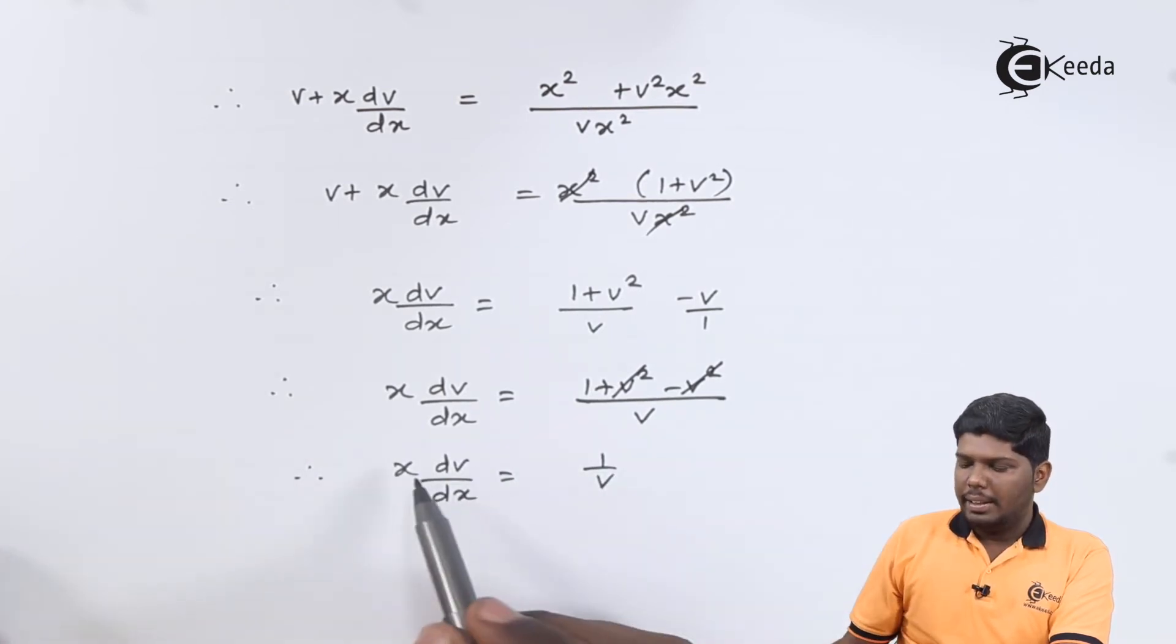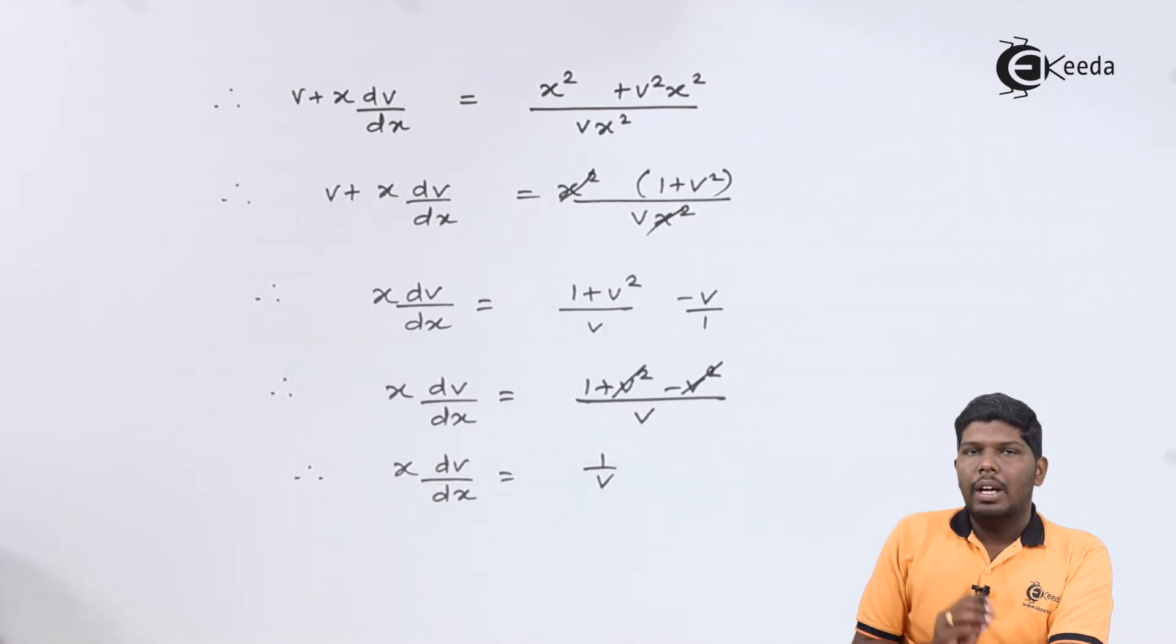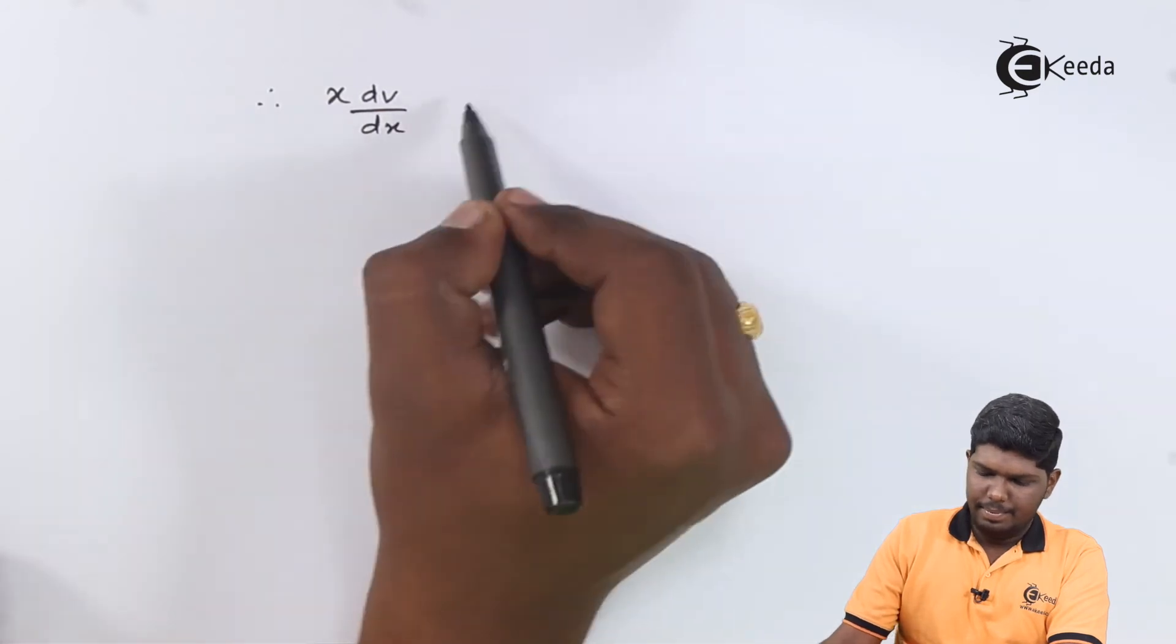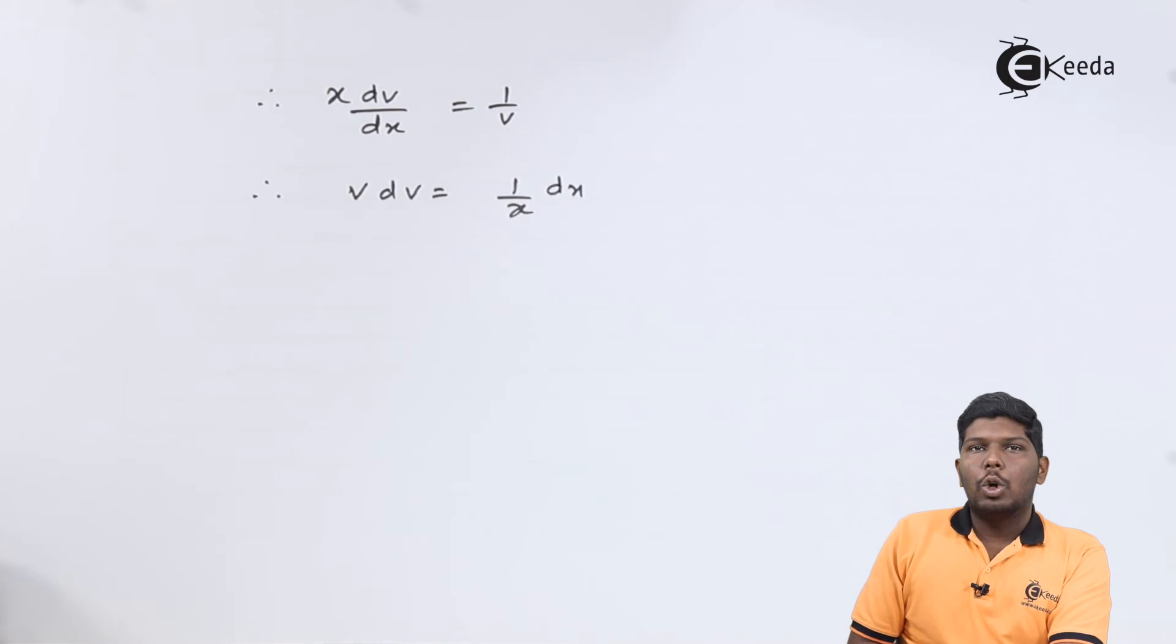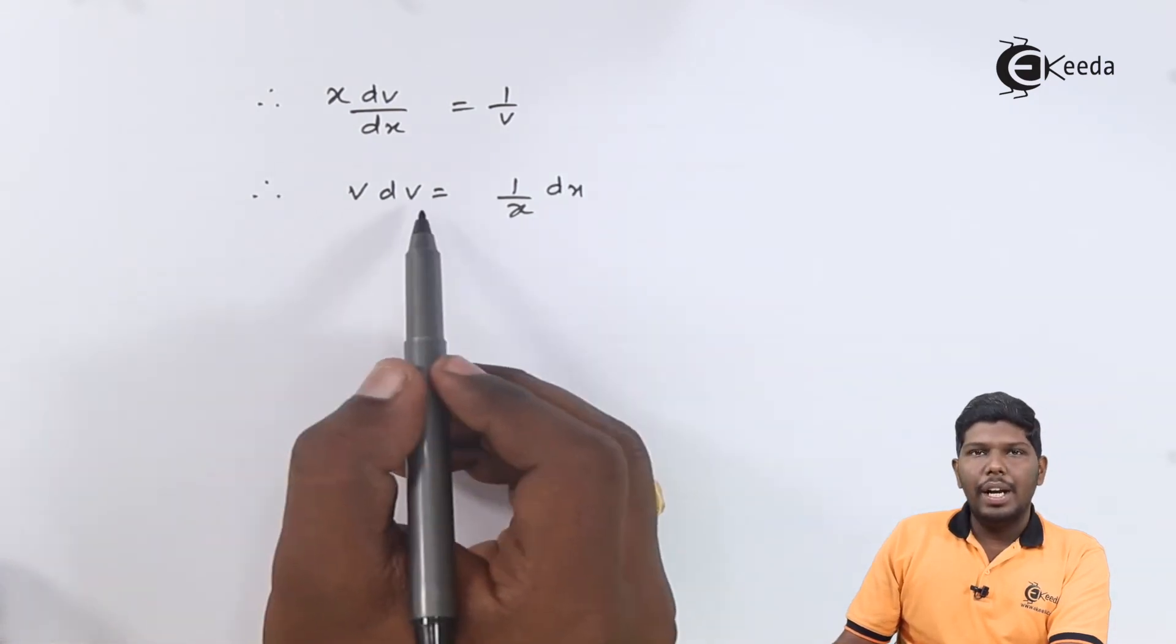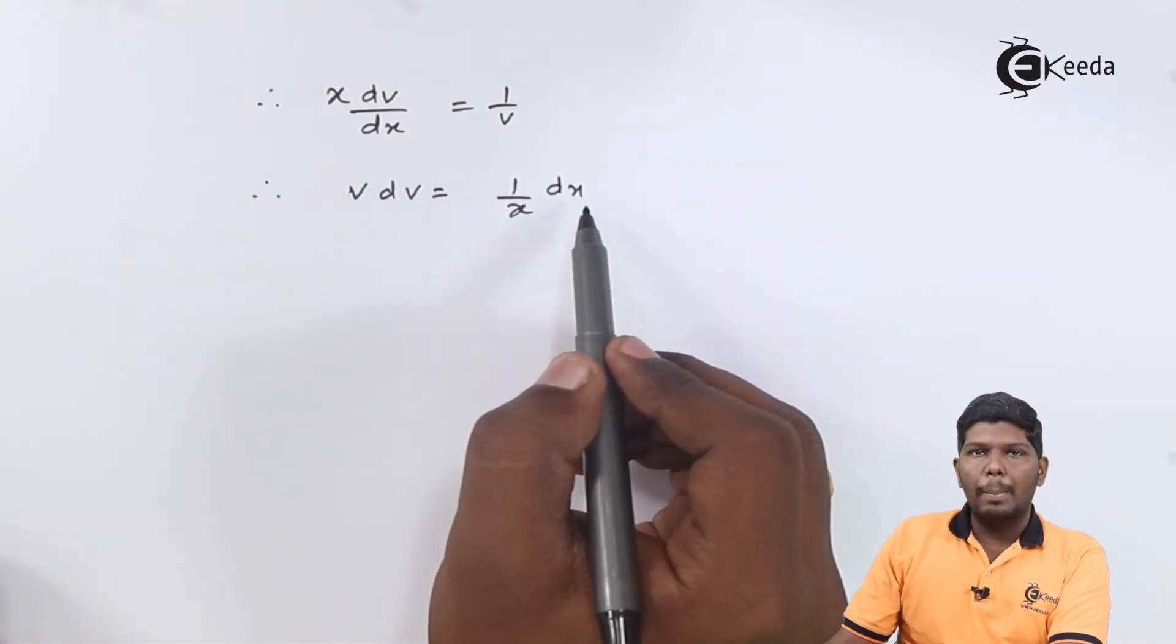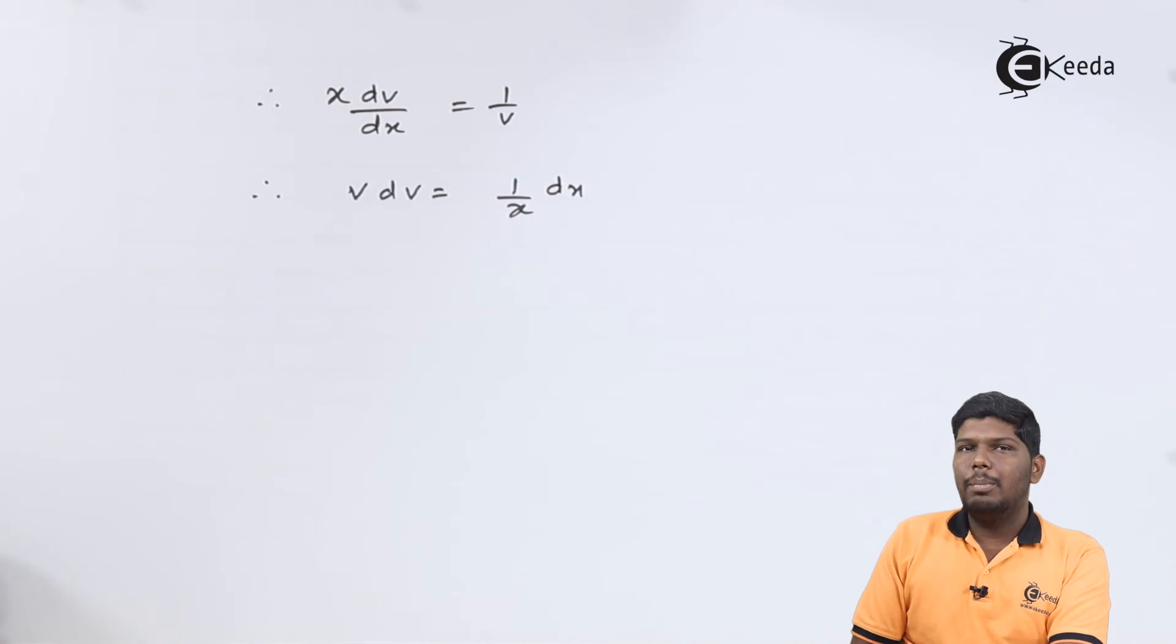Now as you can see, we can solve this further using variable separable form. So let us take dv on the left hand side and dx on the right hand side. On separating variables we have v dv = (1/x) dx, so the next step will be integrating on both sides.